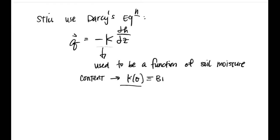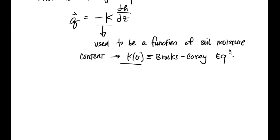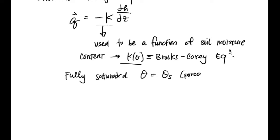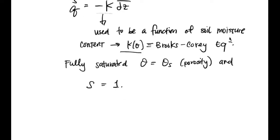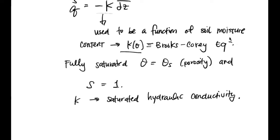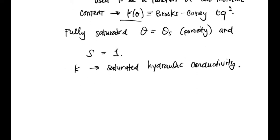Previously, K was described by the Brooks-Corey equation. But now, in this case, we're fully saturated. So theta is equal to theta_s, which is our porosity, and S, our relative saturation, is equal to one. Therefore, K in this equation is going to be our saturated hydraulic conductivity. And of course, this K is going to be a function of soil type, just like it was before.